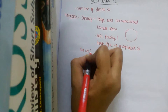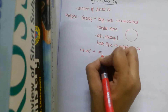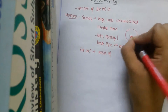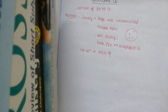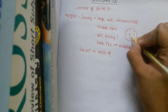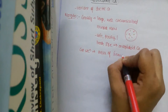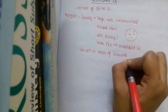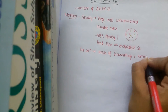On cut section, medullary carcinoma shows areas of hemorrhage and necrosis.